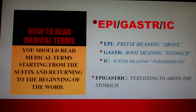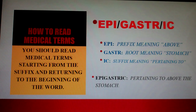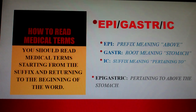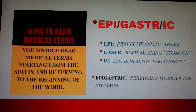How to read medical terms: you should read medical terms starting from the suffix and returning to the beginning of the word. For example, 'Epigastric' — Epi is the prefix meaning above, Gastr is the root meaning stomach, and -ic is the suffix meaning pertaining to. So Epigastric means pertaining to above the stomach.